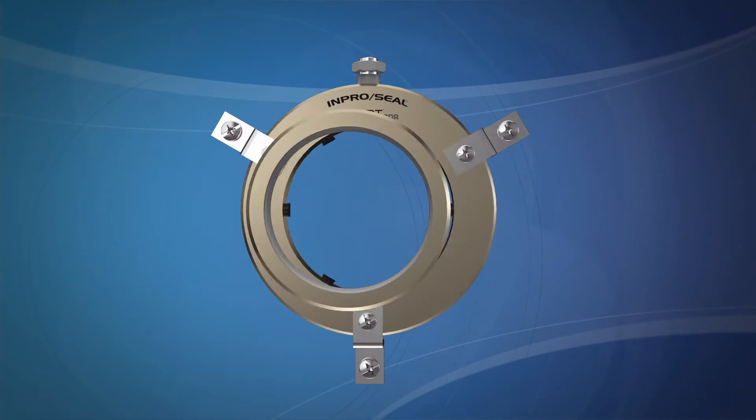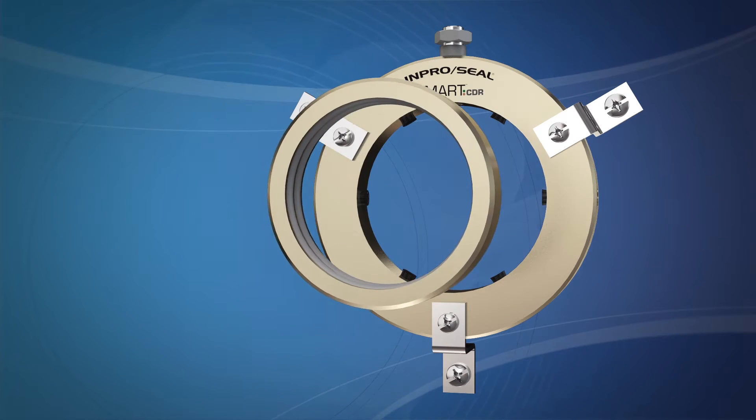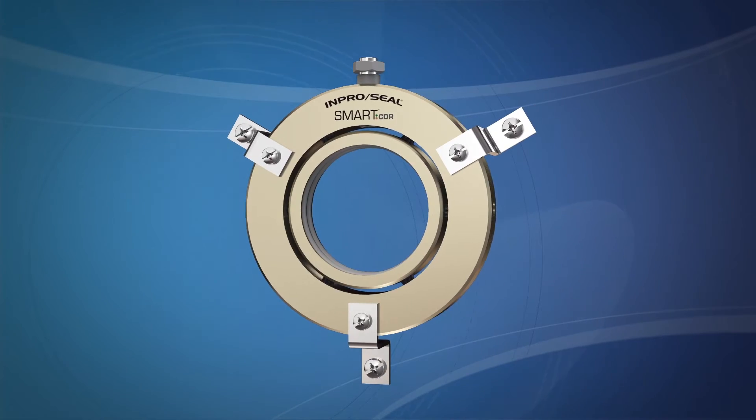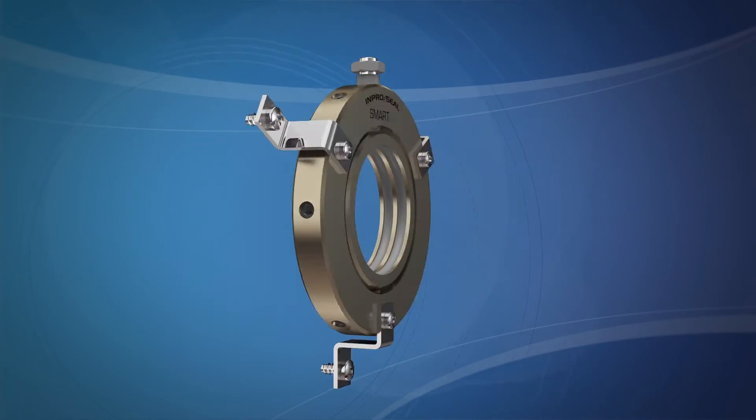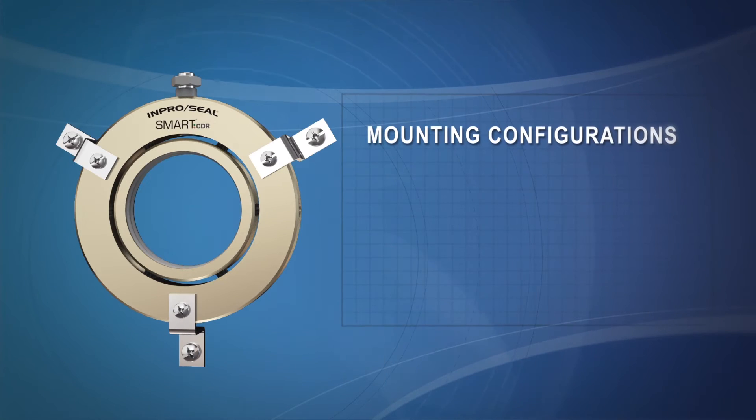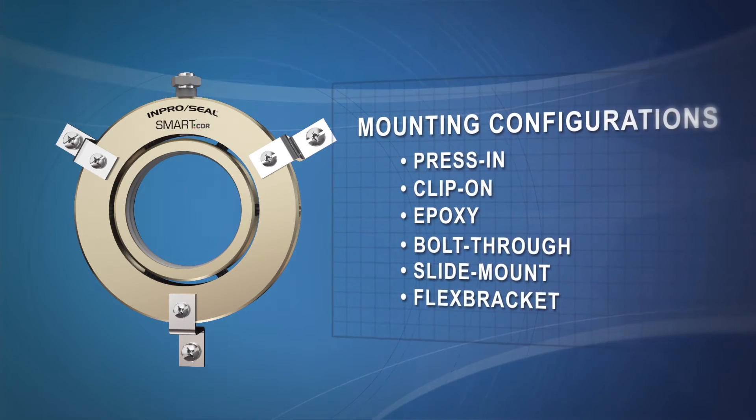The Smart CDR uses proprietary conductive filaments and an innovative sleeve design to safely divert shaft currents away from the bearings to ground, while reducing brush wear and protecting against non-conductive shaft corrosion. The Smart CDR is designed to accommodate a variety of mounting configurations for easy installation.